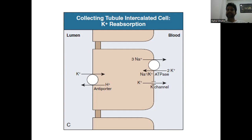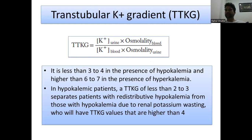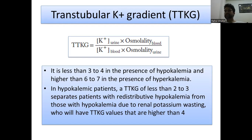The trans-tubular potassium gradient (TTKG) is calculated as urine potassium divided by urine osmolality, multiplied by blood osmolality divided by blood potassium. A TTKG less than 3 to 4 is seen in hypokalemia, and more than 6 to 7 in hyperkalemia. In hypokalemic patients, a TTKG less than 2 to 3 distinguishes redistributive hypokalemia from renal potassium wasting, which has a TTKG higher than 4.